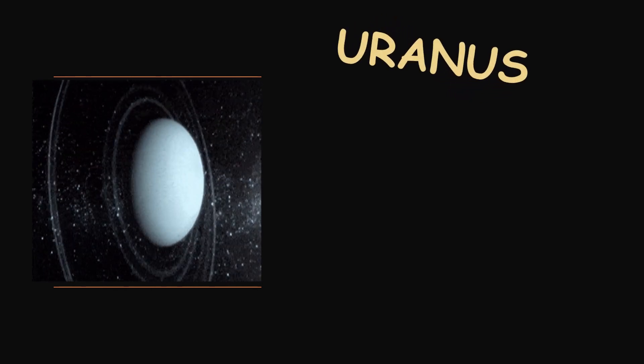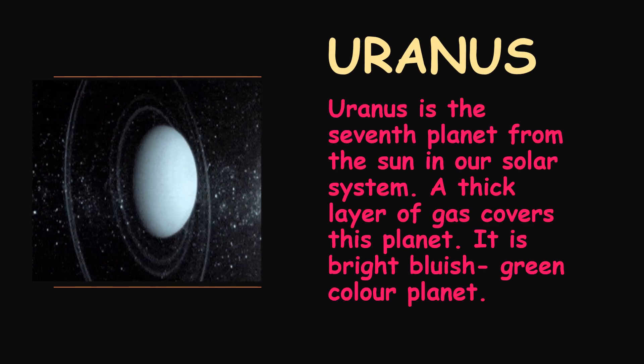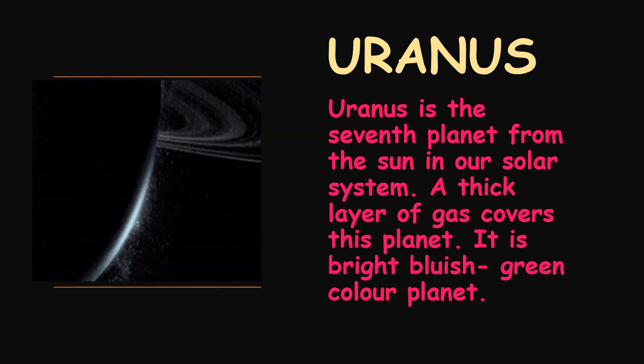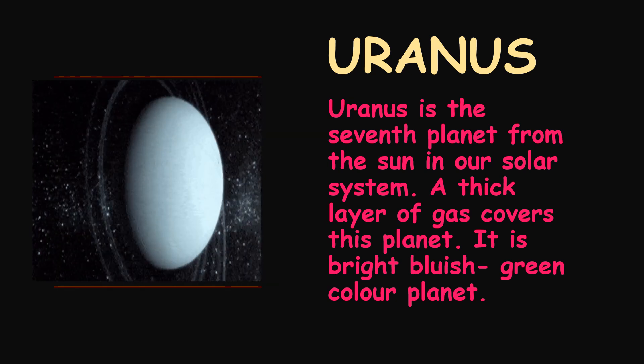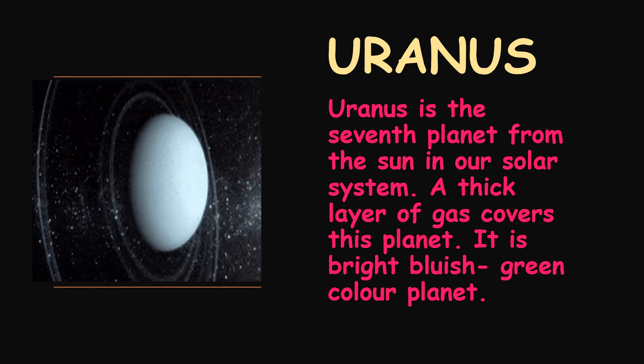Next, we are talking about Uranus. Uranus is the seventh planet from the Sun in our Solar System. A thick layer of gas covers this planet.